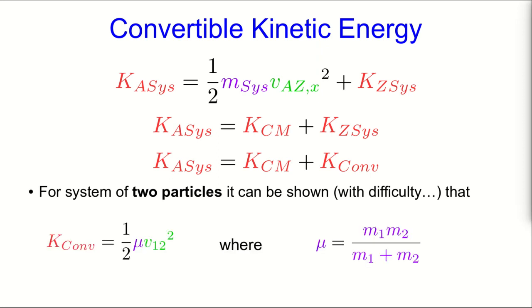that that convertible kinetic energy can be written in this form, where this funny symbol mu here is called the reduced mass. And it's written this way. And this V12 just refers to the relative speed of the two particles in the system.